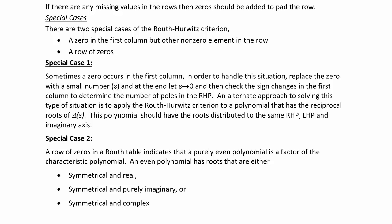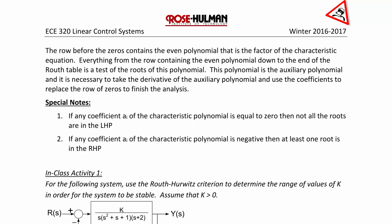Special case 2: if you have a row of zeros, this indicates a purely even polynomial that is a factor of the characteristic polynomial. An even polynomial has roots that are either symmetric and real, symmetric and purely imaginary, or symmetrical and complex. The row before the zeros contains the even polynomial, which is the auxiliary polynomial. Take the derivative of the auxiliary polynomial and use those coefficients to replace the row of zeros to finish the analysis.